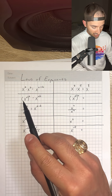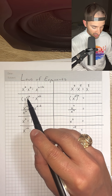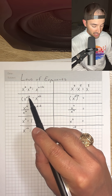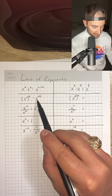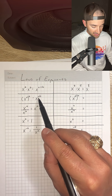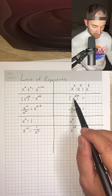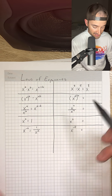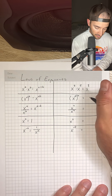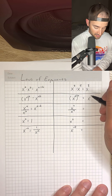Next we have the power rule, and that's x to the a power raised to the power of b is equal to x to the a times b. So x squared raised to the power of 6 would be equal to x to the 2 times 6, so that's to the twelfth power.